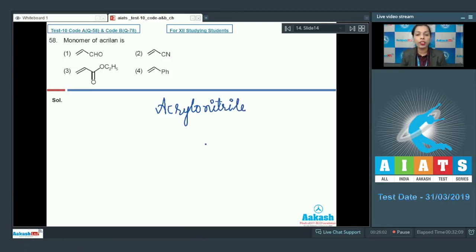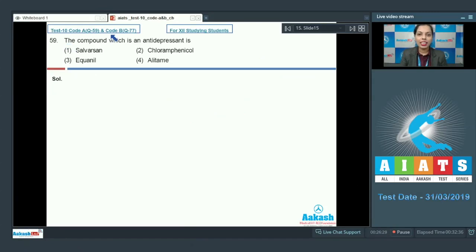After that, question number 58: Monomer of acrylan is - acrylan is the polymer of acrylonitrile. What is the structure of acrylonitrile? That is CH2=CHCN. This would be the structure where it is correctly given here in option 2. Just choose option 2 as your correct option because the monomer of acrylan is acrylonitrile.